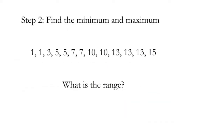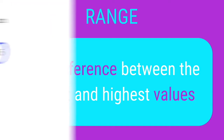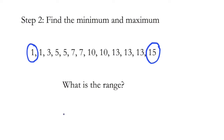Step number two is to find the minimum and maximum. The minimum is the smallest number, so that's pretty easy — the minimum is one, and the maximum, the biggest number, is 15. They might also ask you to find the range of a data set. Range is the difference between the lowest and highest values. To find the range, we simply do 15 minus 1, which equals 14. So our range is 14.